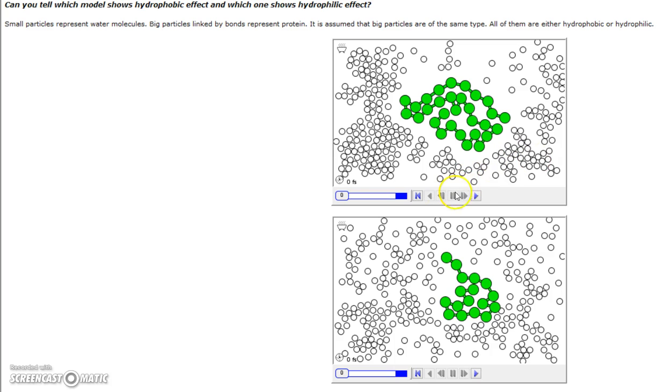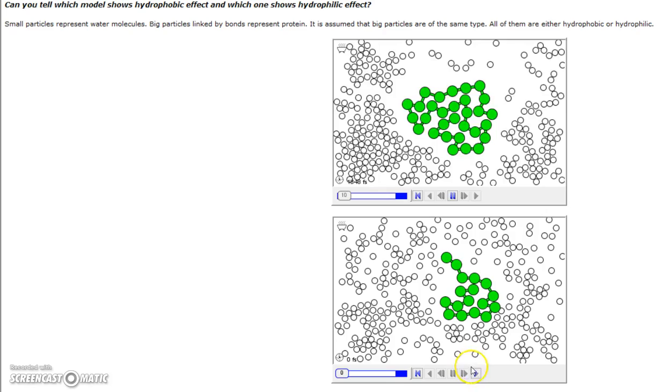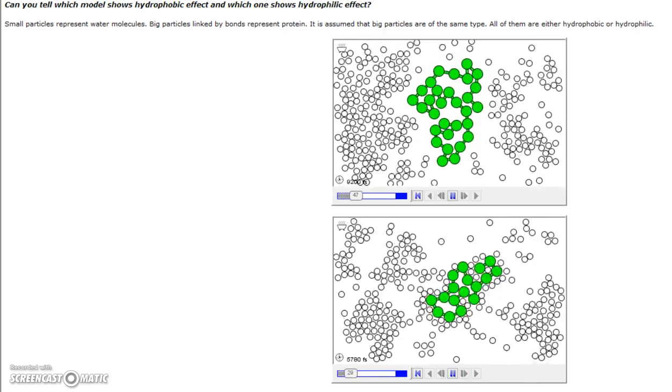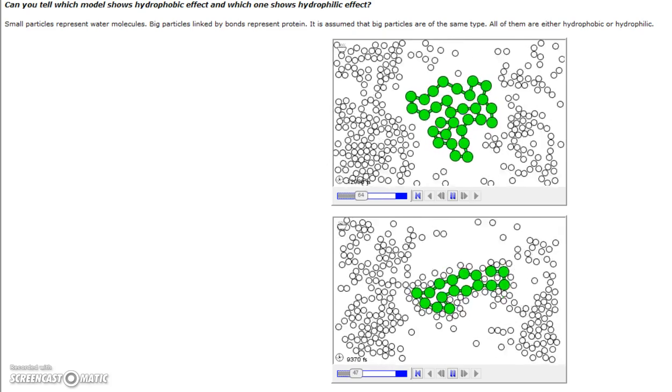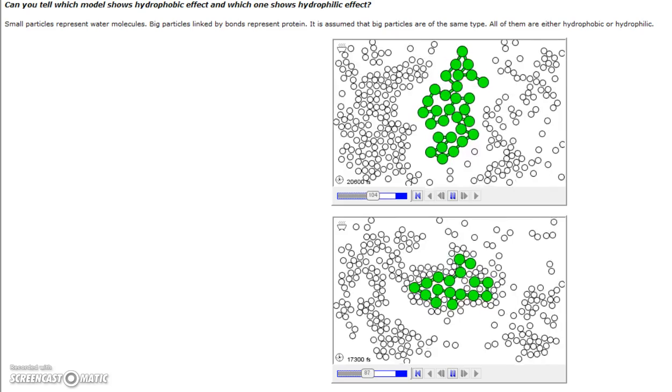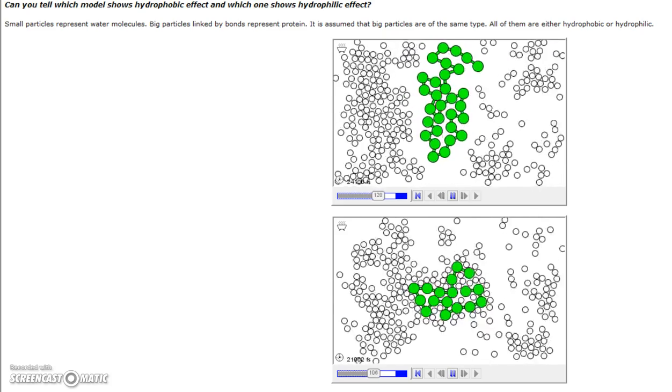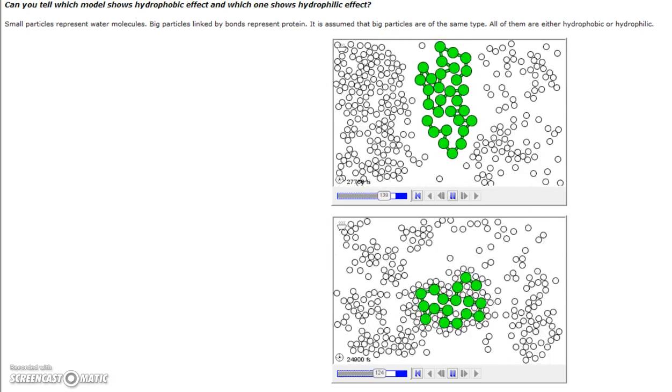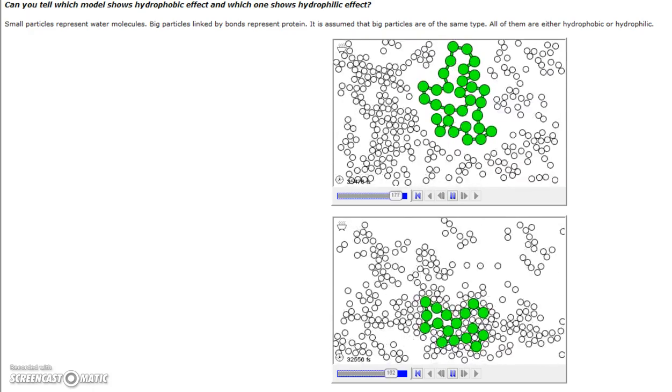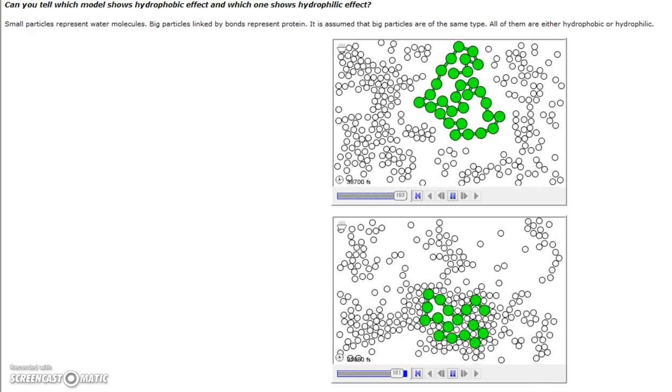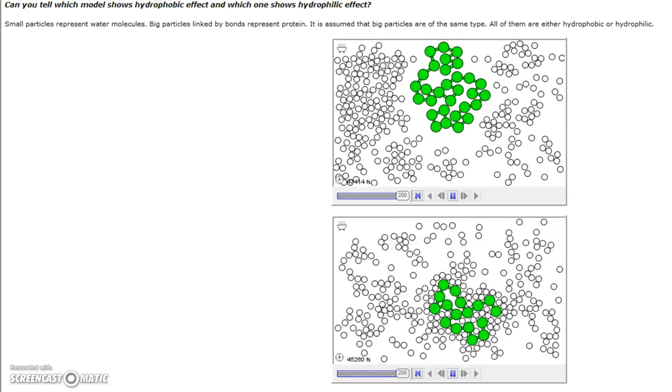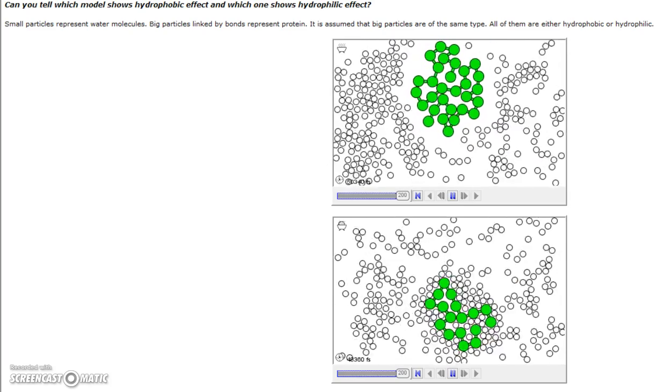Pay attention to this first simulation on the top and the one on the bottom. Can you tell which one's hydrophobic and which one's hydrophilic? Remember the properties of water that repel water—in the top picture, you see the white water molecules being repelled away from the green amino acid chain. On the bottom, you see the white water molecules going towards the green amino acid and sticking to them. This shows the repelling and attraction nature of hydrophobic and hydrophilic molecules.